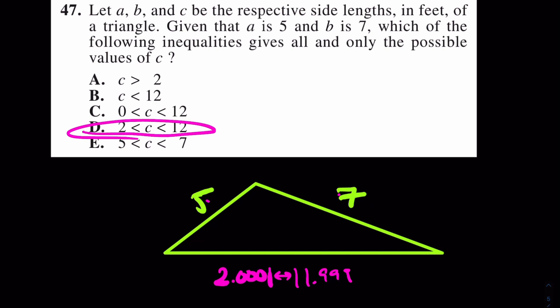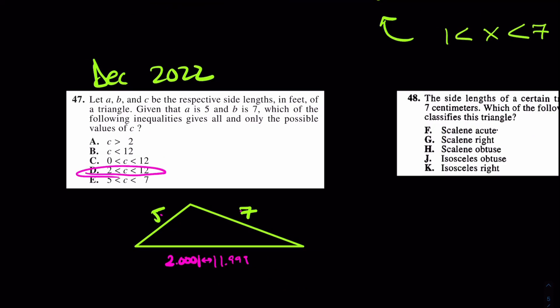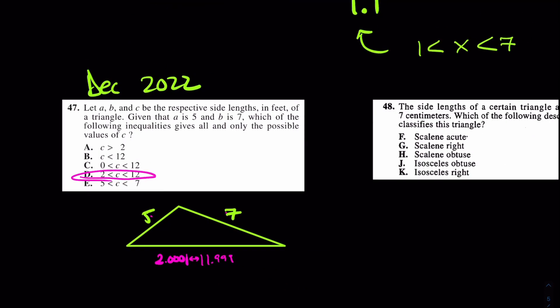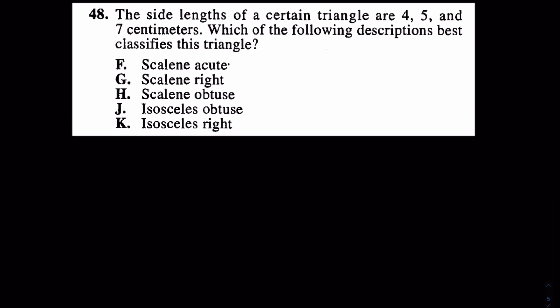I hope that helps make sense of that. If you have any questions, comment down below. But come over here for number 48. This is from an older exam, but it's actually pretty relevant still. This isn't the exact same idea, but it is a weird one for sure. This question says 4, 5, 7—again, 4, 5, 7—doesn't say whether it's a right triangle, doesn't say anything.